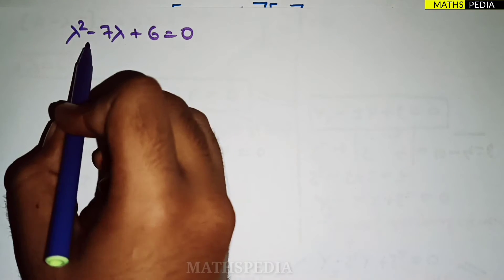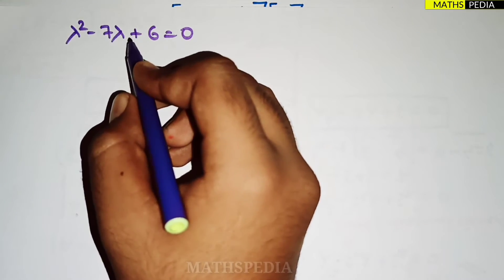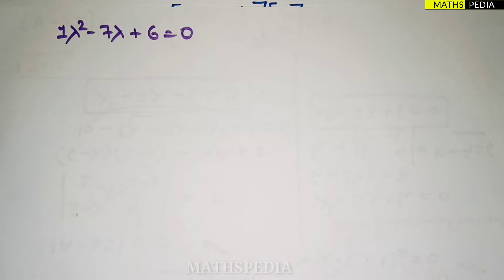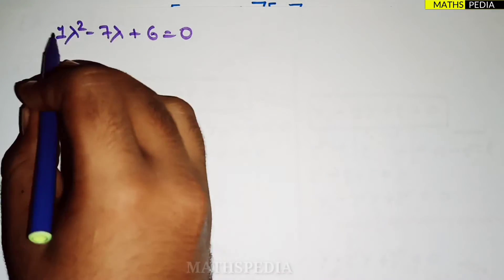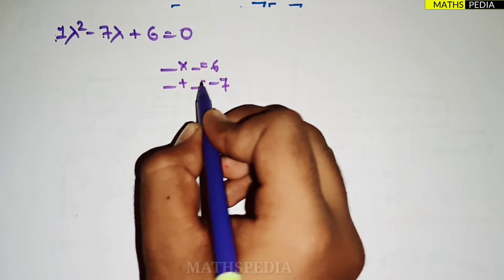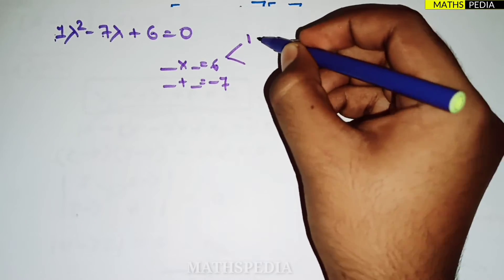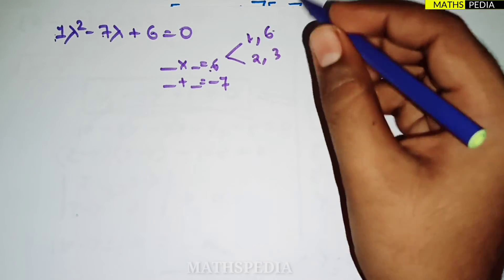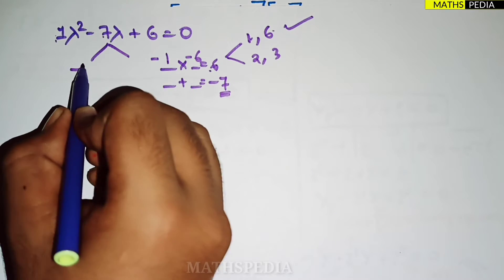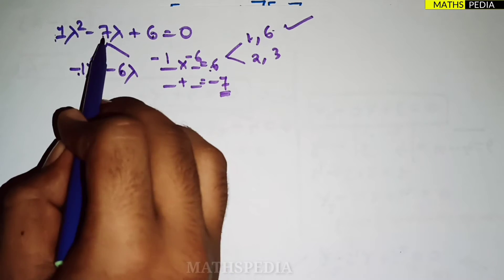Now we solve this quadratic equation to find the eigenvalues. Using splitting of the middle term: we need two numbers that multiply to 6 and add to −7. Those are −1 and −6. So we split −7λ into −λ − 6λ.